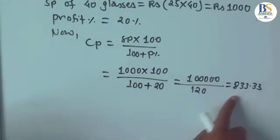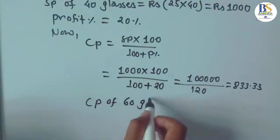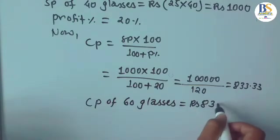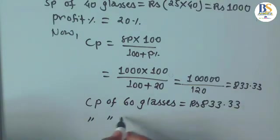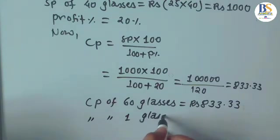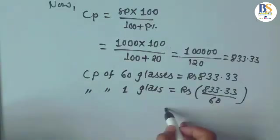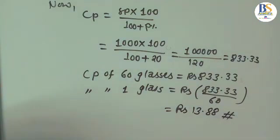This RS 833.33 is the CP of all 60 glasses, because he made 20% profit on the whole transaction. CP of 1 glass = 833.33 / 60 ≈ RS 13.88. So the cost price of each glass is RS 13.88.